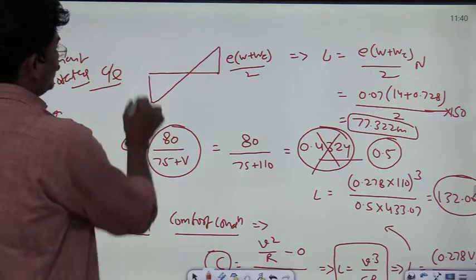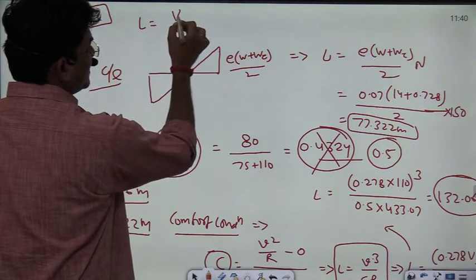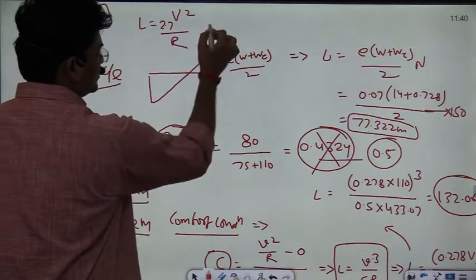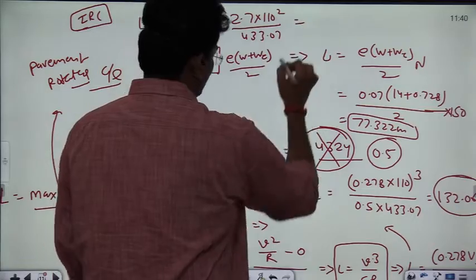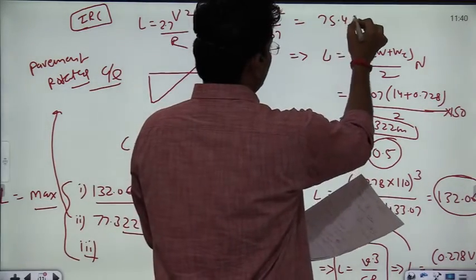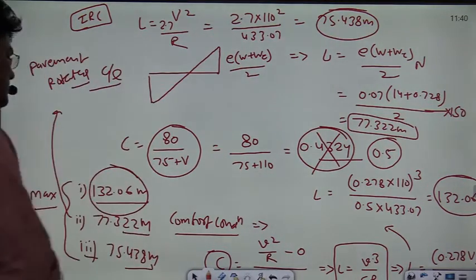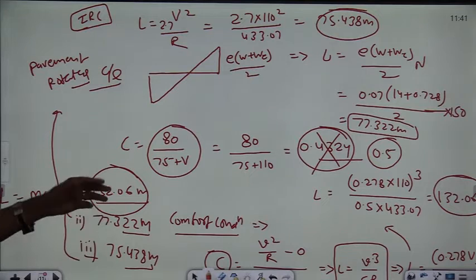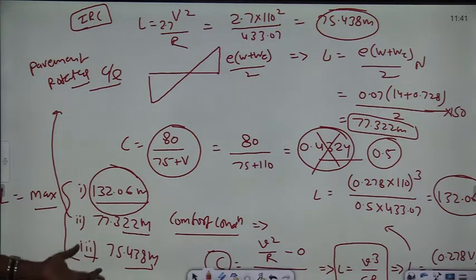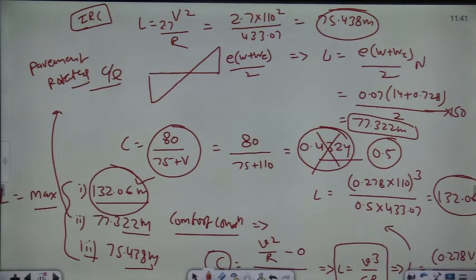For the third condition — per IRC guideline — the formula is L = 2.7 × V² / R = 2.7 × 110² / 433.07 = 75.438 meters. Comparing all three: 132.06 m, 77.322 m, and 75.438 m. The maximum value is from the comfort condition: 132.06 meters. Therefore, the length of the transition curve is 132.06 meters.